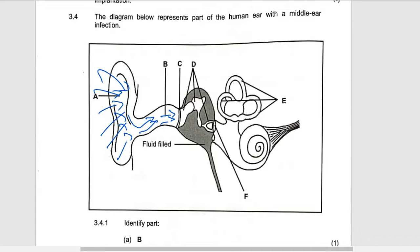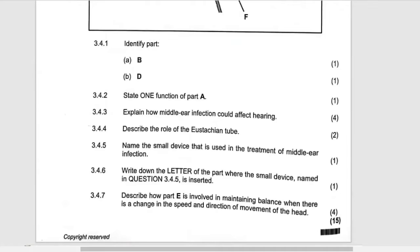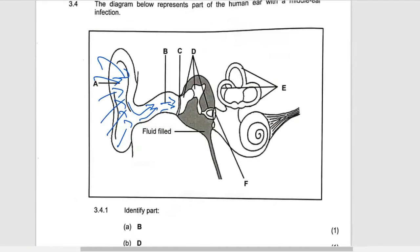And then saying that another question is explain how the middle ear infection could affect hearing. How is this middle ear infection affect hearing? It means that there will be a problem with the part D, these ossicles to move freely. So basically you can say that part D or what called the ossicles, the ossicles will not vibrate freely because of the fluid which is inside there.